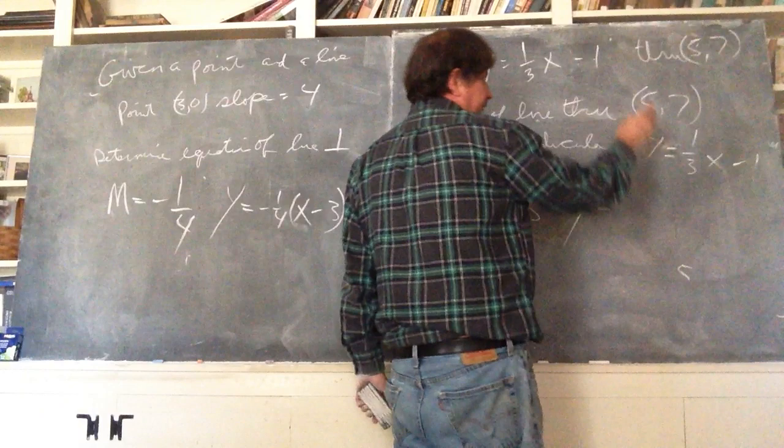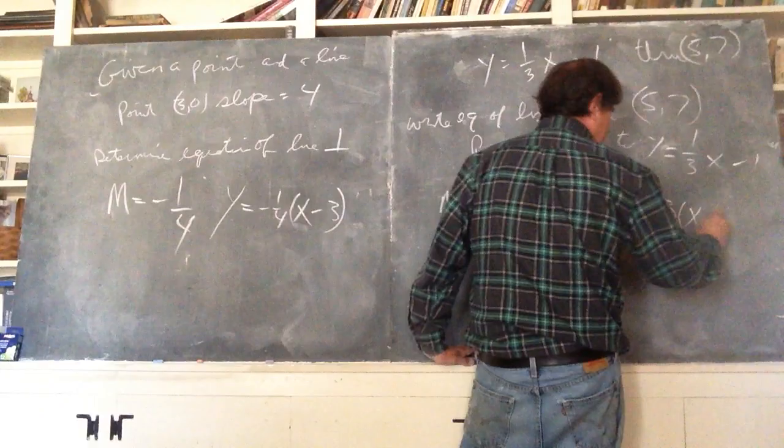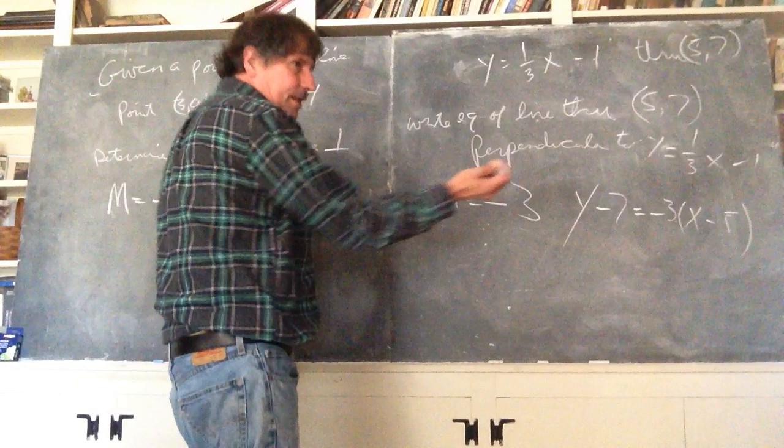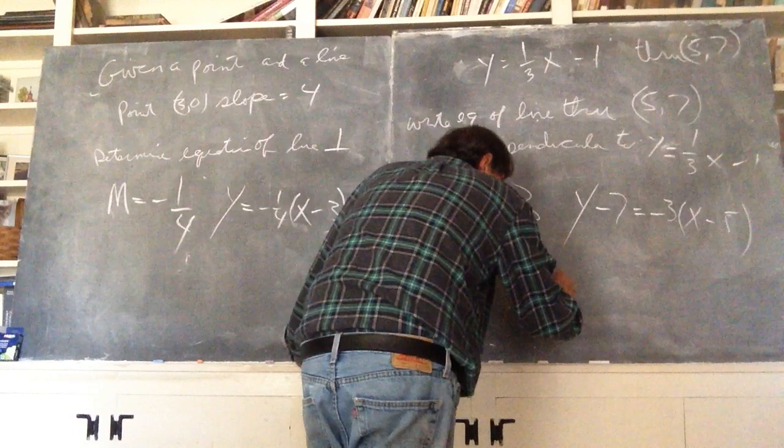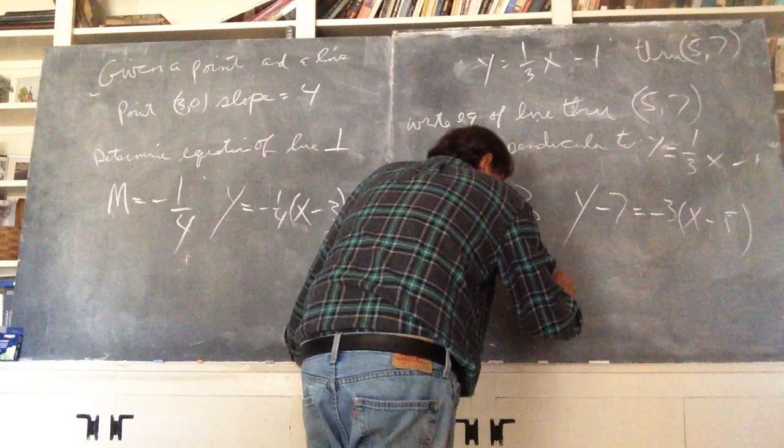y minus seven equals negative three times x minus five. And there it is. That's in point slope form. Of course, we are trying to put everything in slope intercept form. y minus seven equals negative three x plus fifteen. y equals negative three x plus seven plus twenty-two.